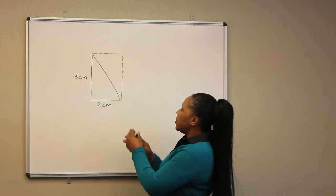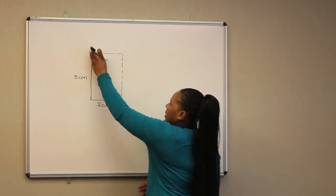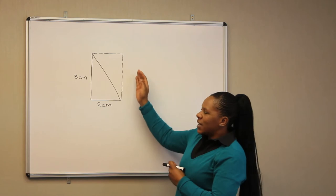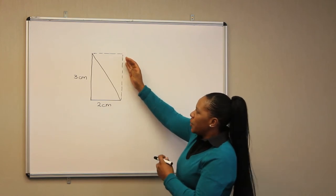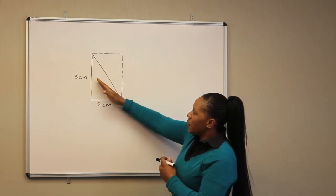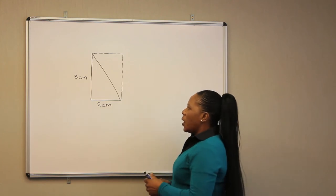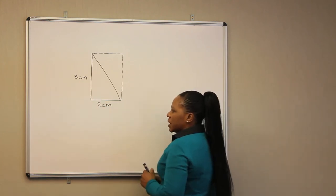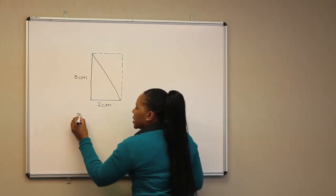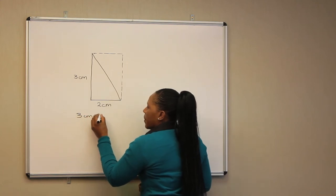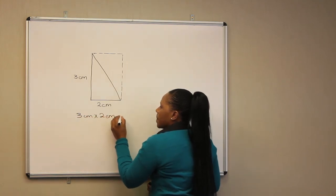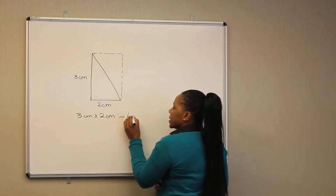We can put an imaginary rectangle which is equally the same as the original triangle. Now we calculate the area of this rectangle, which is 3 cm multiplied by 2 cm. We get 6 cm².